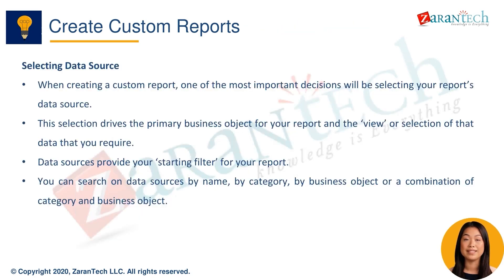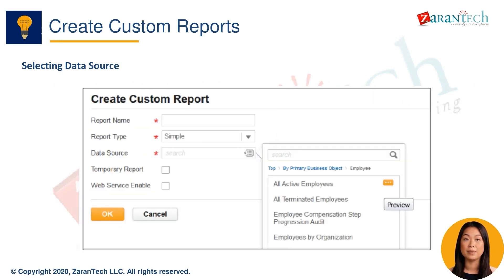When selecting a data source, this drives the primary business object and starting filters for your report. You can search for data sources by name, category, business object, or a combination. It's important to choose the right data source, as it largely defines your report. Here's an example of searching for data sources by category and business object. This helps narrow down the choices to find the optimal data source.